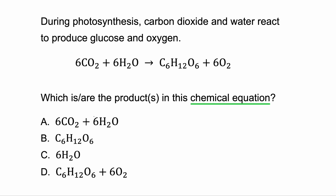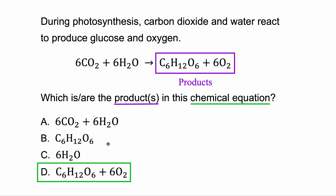One question is: what are the products in this chemical equation? Products are just the things on the right side of the equation. Let's highlight those — that's the final answer. Things on the right side are the products.